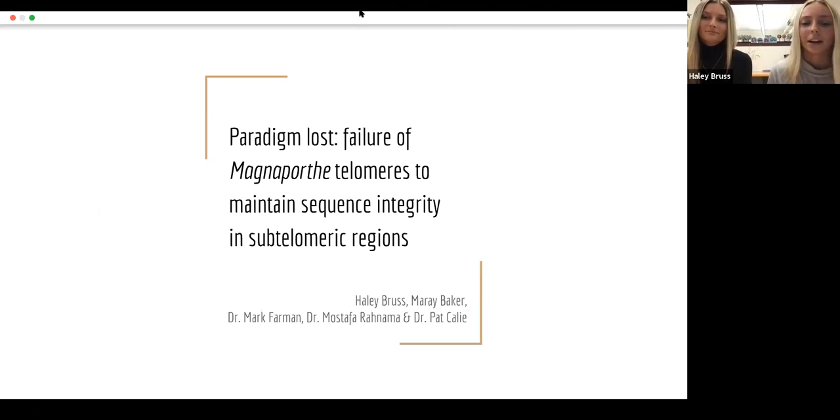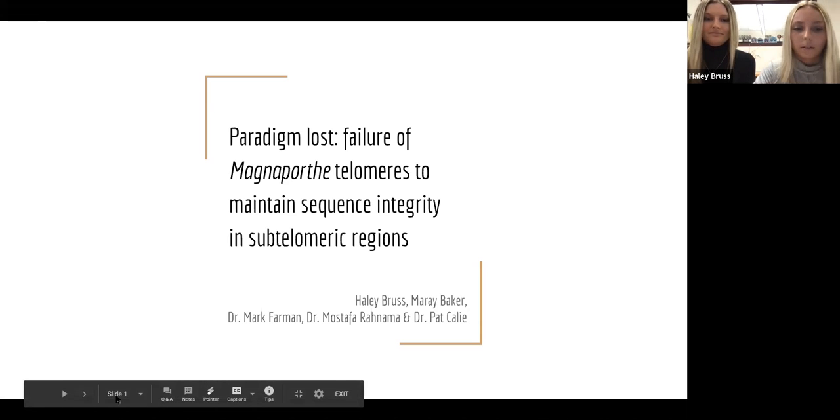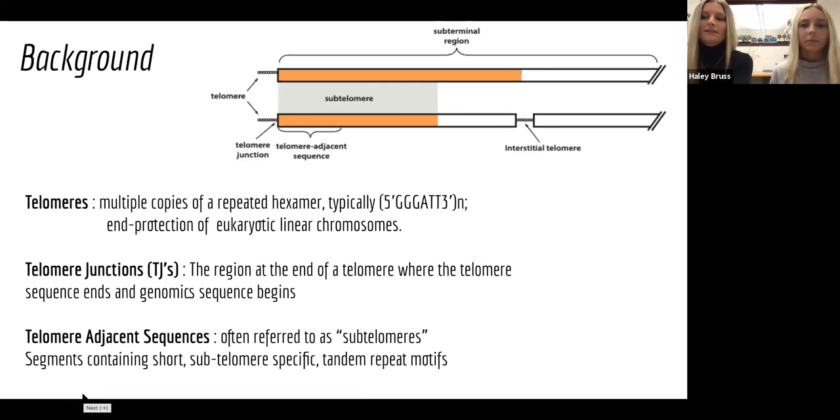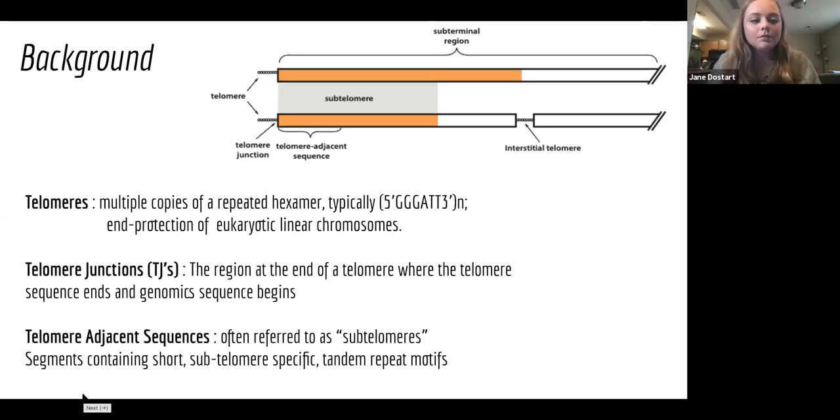Good afternoon, everyone. I hope everyone's doing great. And my name is Haley Bruss. And my name is Murray Baker. And we wanted to take this time to discuss with you all the research we've been working on a little over a year now in regard to the fungus Magnaporthe and its prevalence in chromosomal sequence integrity by telomeres. Okay, so background information that's relevant to this presentation would be the knowledge of what a telomere is, a telomere junction and a telomere adjacent sequence. So essentially, a telomere is a repeated hexamere found at the end of a linear chromosome. And its job is essentially to protect the genomic sequence within the chromosome. A telomere junction is a region in between the telomere and the genomic sequence itself. It serves as a boundary in between the two. And then a telomere adjacent sequence is a small region right past the telomere that essentially serves as where the genomic sequence starts. And it is made up of short subtelomeric specific tandem repeat motifs.